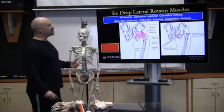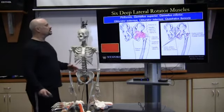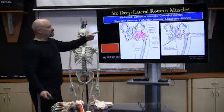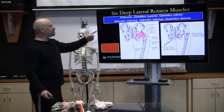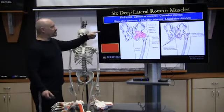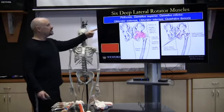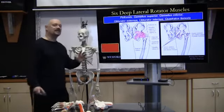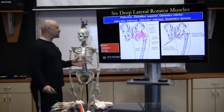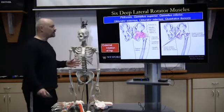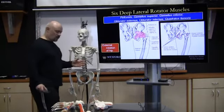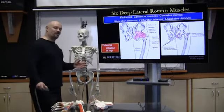The six deep lateral rotator muscles are the piriformis, gemellus superior, gemellus inferior, obturator externus, obturator internus, and quadratus femoris. All they do is externally rotate the hip — the whole leg externally rotates.